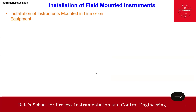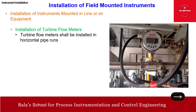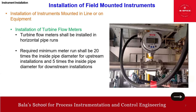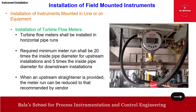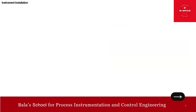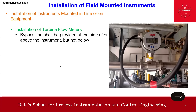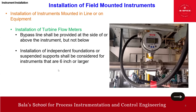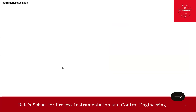For the turbine flow meter: it shall be installed in the horizontal pipeline. The required minimum meter run shall be 20 times the inside pipe diameter — 20D upstream — and 5D downstream. When an upstream straightener is provided, the meter run can be reduced, perhaps to around 10D based on vendor recommendation. Additionally, a bypass line shall be provided at the side or above the instrument — not below — and installation on an independent foundation shall be considered for instruments 6 inch or larger.